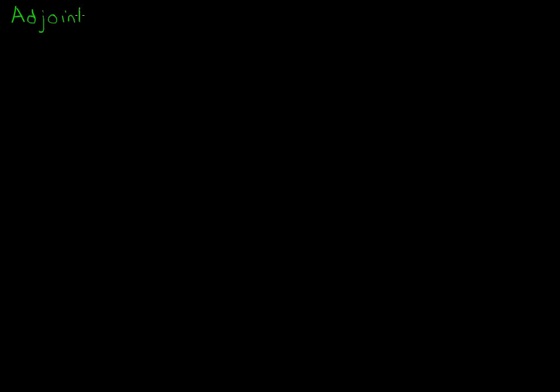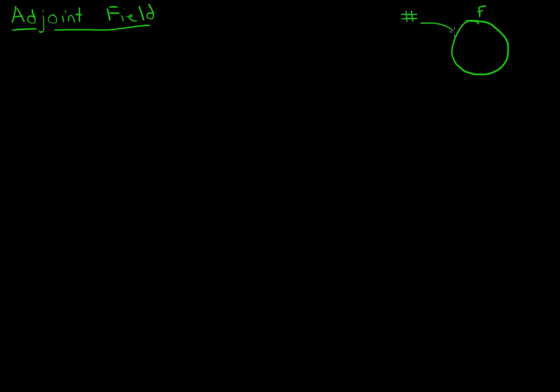In this video I would like to introduce a new class of fields. And if you've been doing the practice problems for these videos, this probably will seem pretty familiar. These are called adjoint fields. Basically the idea is we're going to take some field — let's call it F — and we want to take this field and add in some number that's not already in there, and we want to put that in the field as well as anything else we might need to keep this a field.